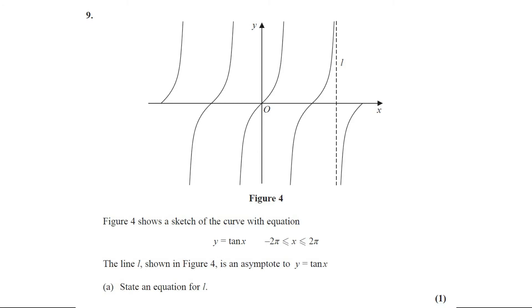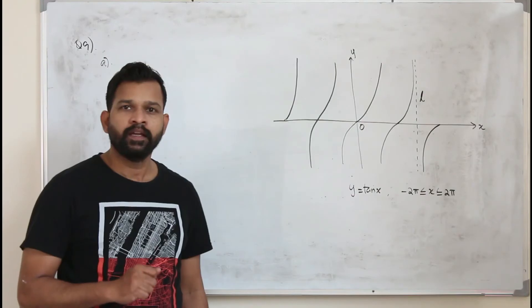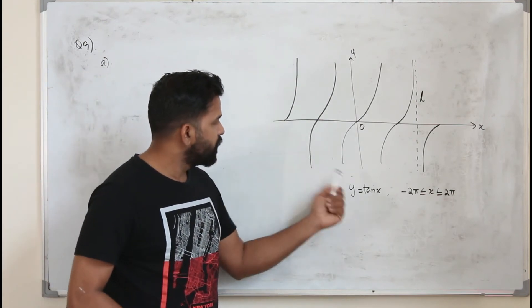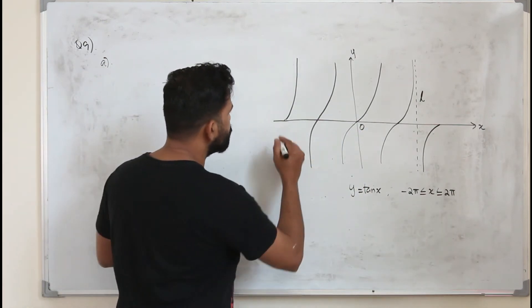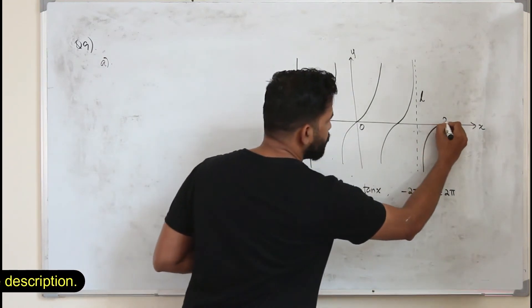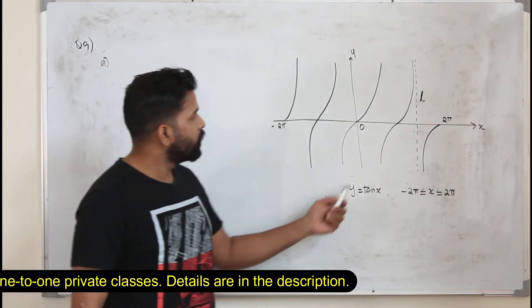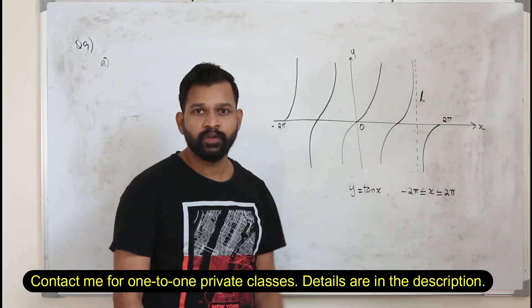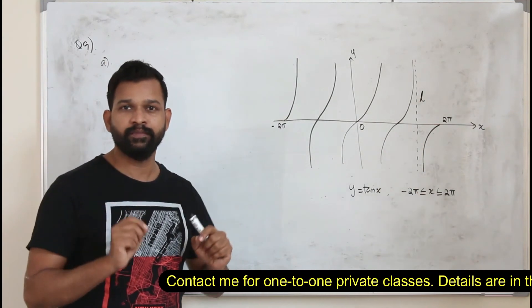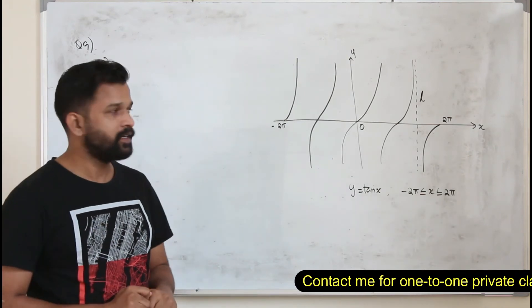Question number 9. Figure 4 shows a sketch of the curve y equals tan x from minus pi to 2 pi. The line L shown is an asymptote to y equals tan x. Part A: state an equation for it. This question carries one mark. To find the equation of the asymptote, you need to know how to sketch the tan graph.